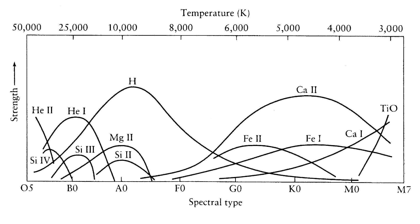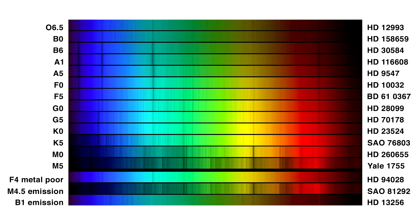While Annie had gone and simplified things by throwing away letters, there was still some need for granularity. So what they started doing was adding numbers after the classes. The most extreme blue stars would be O-0, and as they got more towards white they would go 1 through 9, then you would get B-class 0. The Sun, for example, is a G2. So all these numbers go from 0 to 9, right down until you get to M.